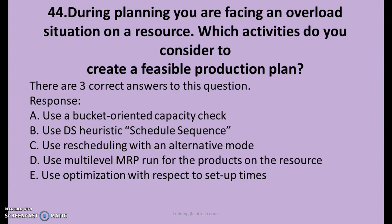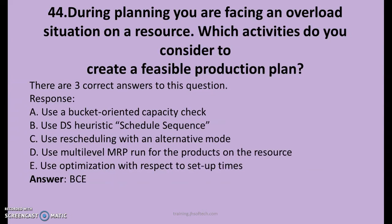44th question. During planning, you are facing an overload situation on a resource. Which activities do you consider to create a feasible production plan? There are three right answers. A. Use a bucket-oriented capacity check. B. Use DS heuristic schedule sequence. C. Use rescheduling with an alternative mode. D. Use multi-level MRP run for the products on the resource. E. Use optimization with respect to setup times. The right answers are B, C and E.